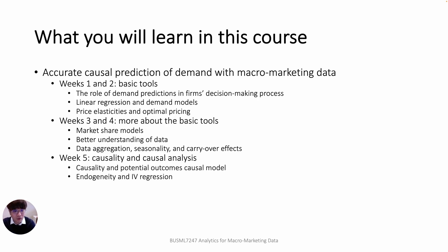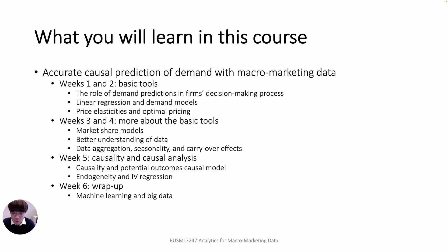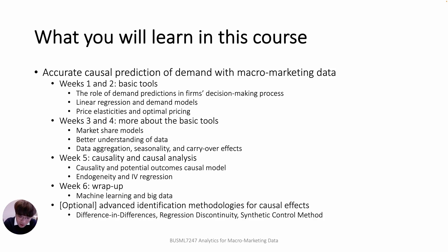In week five, you will learn about causality and causal analysis. Causality is the most important concept to empirically analyze the effect of a marketing intervention on consumer demand. You will learn how to statistically describe the causal effect through the potential outcomes causal model. The key to causal analysis is to understand and handle endogeneity. You will also learn how to handle endogeneity using instrumental variable regression. The last week is the wrap-up week. I will briefly introduce machine learning and big data in marketing. In addition, there are three optional lectures for advanced identification methodologies, including difference-in-differences, regression discontinuity, and synthetic control methods. They are not required, but you can get extra credits if you successfully complete those optional lectures.